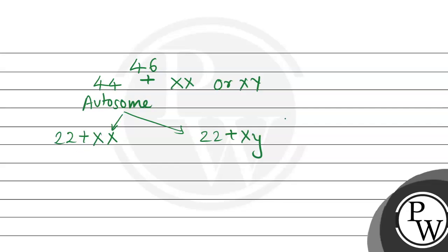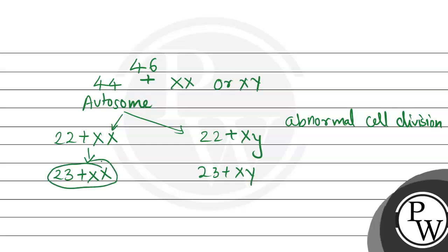So now what is going to happen here because of faulty cell division? Because of abnormal cell division, what is going to happen here is that the normal number should have been 22 plus XX chromosome or 22 plus XY chromosome, but instead the gametes are going to carry 23 plus XX chromosome or 23 plus XY chromosome. So this is an abnormal cell. This can be an ovum or a sperm. Both cases are possible.